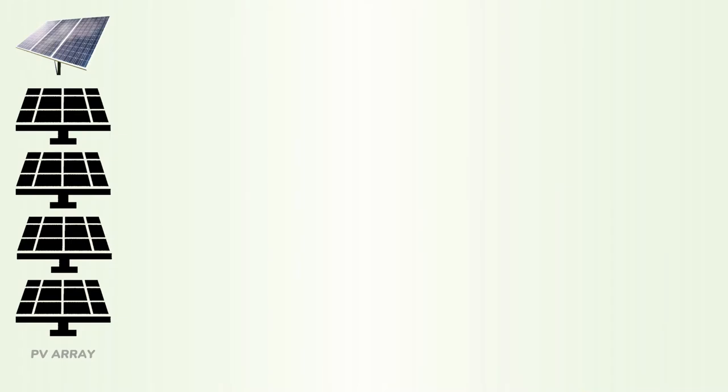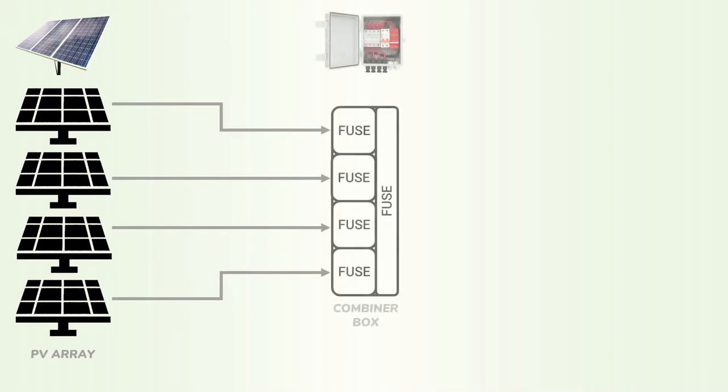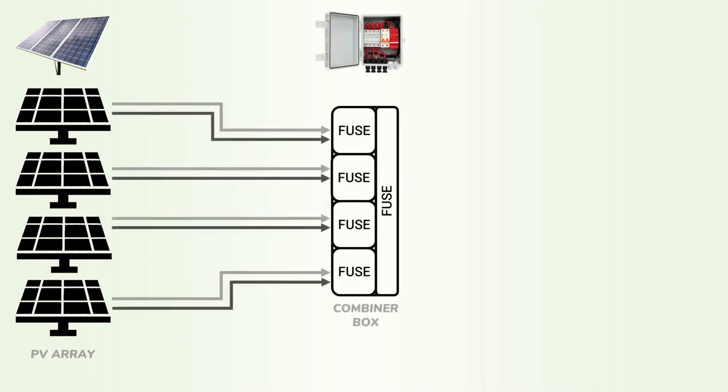Now with either a pass-through box or a combiner box, we can transition from the PV wire or the USE2 wire that's coming from the solar array and then we can transition that into a less expensive wire like the THWN2. So again, in this example, we have four strings in the solar array that will be connected in parallel. In this case, the combiner box serves as a junction for all of the wires coming from the solar array. Now each string in the array has its own set of wires that enter the left side of the combiner box.